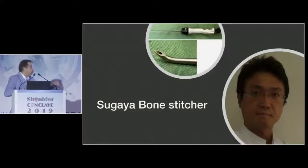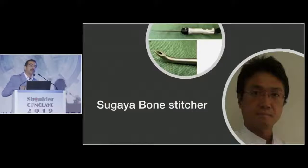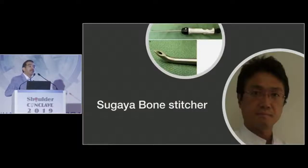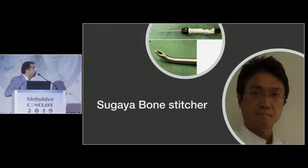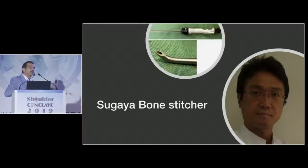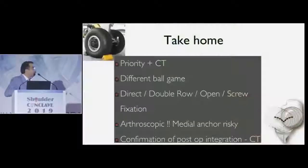Sugaya does it in a very elegant manner in a different technique where he has a bone stitcher — patented technology — and he passes it through the fragment, getting a bone-to-bone reduction and fixation. He's shown at six months and one year that the whole glenoid reconstructs itself back to its native position.